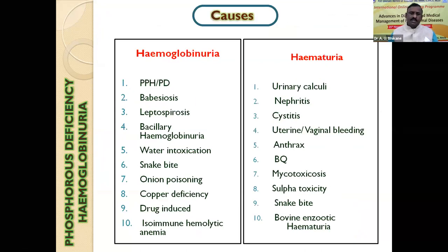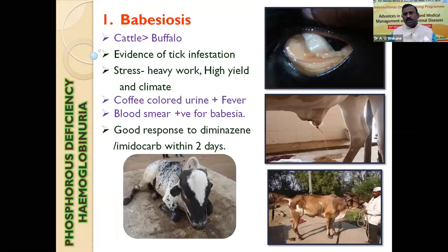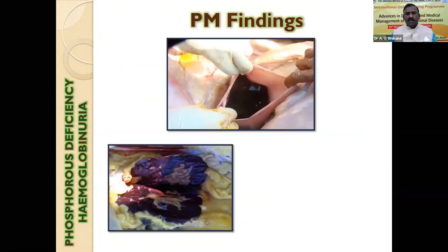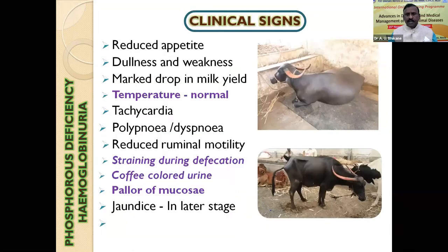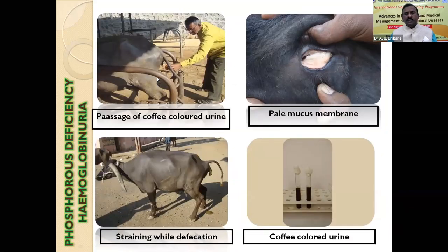Once it is clear that it is hemoglobinuria, the different possibilities include PPH (post-parturient hemoglobinuria), which has been well described by an earlier speaker, and babesiosis, which has also been explained. In case of PPH, you can note the reddish or coffee-colored urine, pale mucous membranes or slightly orange membranes, and straining while defecation — these are characteristic. In our study, 70% of cases of PPH showed normal body temperature.